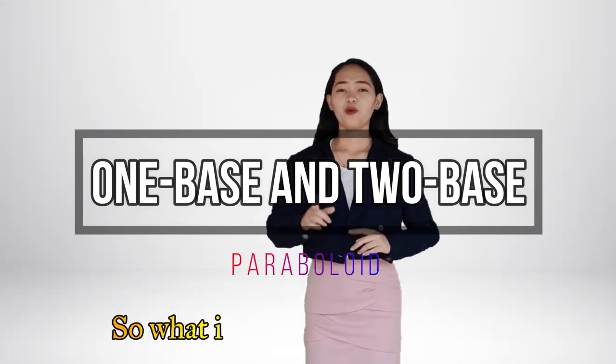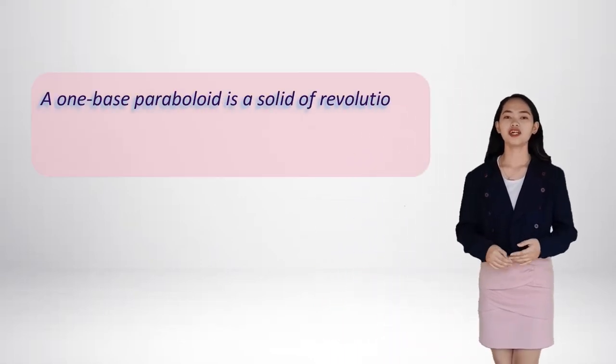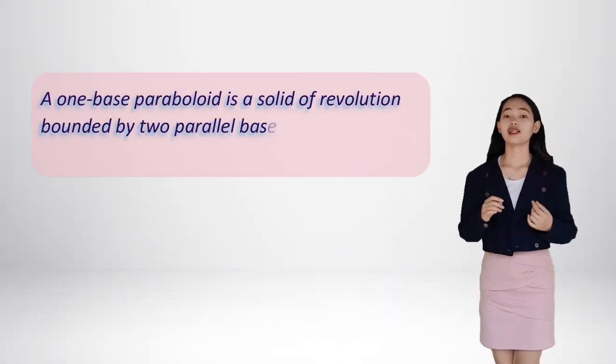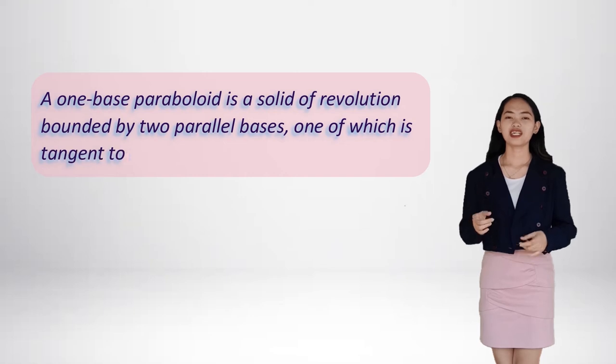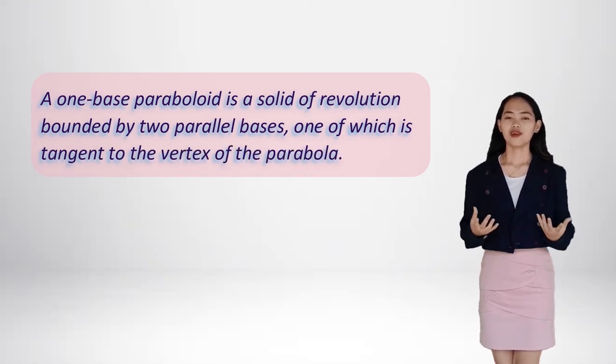So what is a one-base paraboloid? A one-base paraboloid is a solid of revolution bounded by two parallel bases. One of which is tangent to the vertex of the parabola.